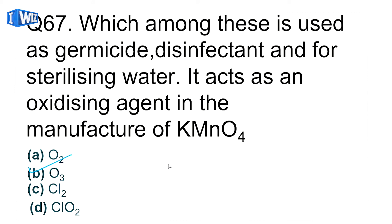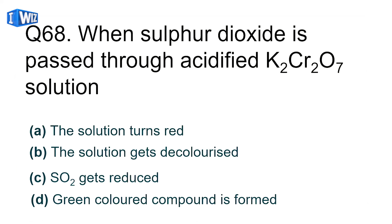When sulfur dioxide is passed through acidified K2Cr2O7 solution, what happens? First option says solution turns red, second says solution gets decolorized, third says sulfur gets reduced, fourth says green colored compound is formed. The second option is correct, the solution gets decolorized.